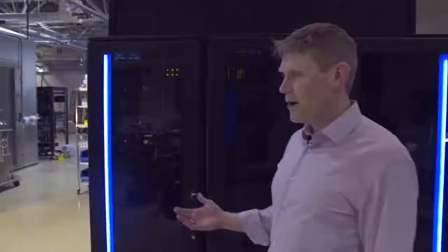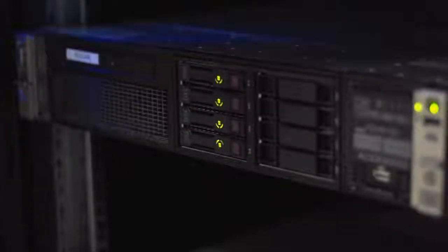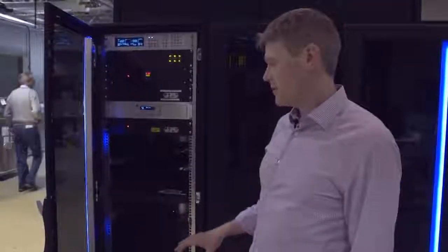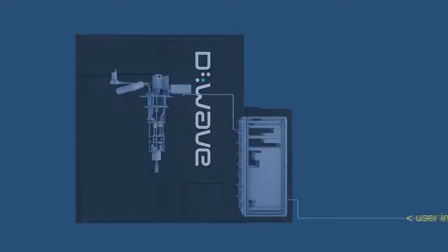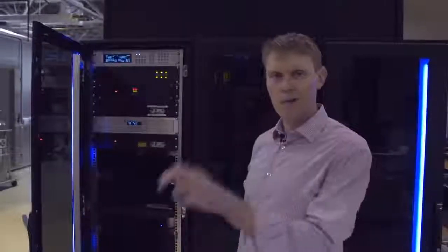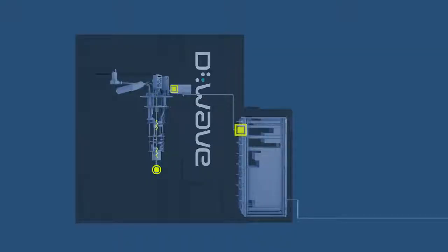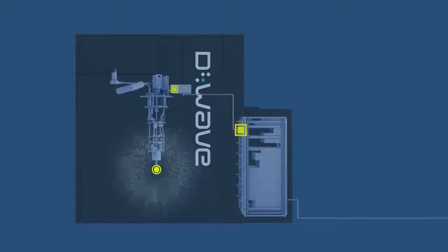In this rack is the quantum server, which allows users from anywhere in the world to interact with the processor itself. This server is receiving information from users, converting that into the machine language of the processor and sending that machine language into the room behind, where high-precision analog electronics will convert those signals into electrical pulses, which are sent through cables into the refrigerator and down through the cooling system to the ultra-low temperature of the processor. It executes its problem and then data from the processor is returned to the server and returned to the user.